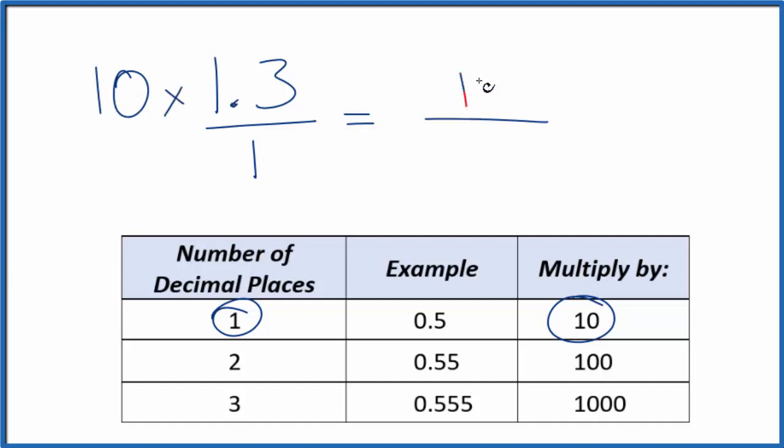10 times 1.3, that gives us 13. That's a whole number. But 13, that's not equal to 1.3. So we need to multiply the bottom by 10 as well.